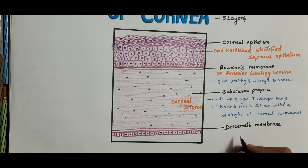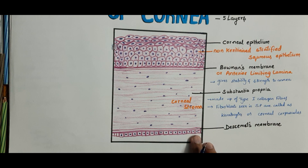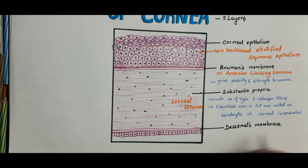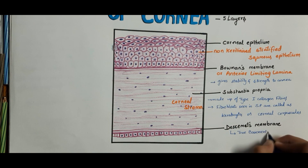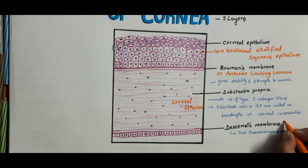The fourth layer is Desmet's membrane. Deep to the substantia propria, there is a limiting membrane called the posterior limiting membrane or Desmet's membrane. It is a true basement membrane, also called the posterior limiting lamina.